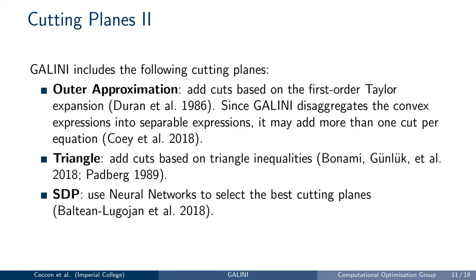The extension mechanism is flexible enough that we use it for the cut generators shipped by default in Galini. We include standard outer approximation cuts, and since as part of the relaxation process with disaggregated convex extractions we may add more than one cut per original constraint, we also include a generator for cuts based on triangle inequalities and one that uses neural networks to select the best cuts.